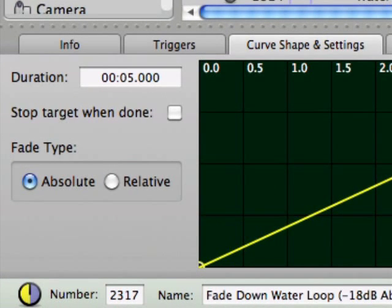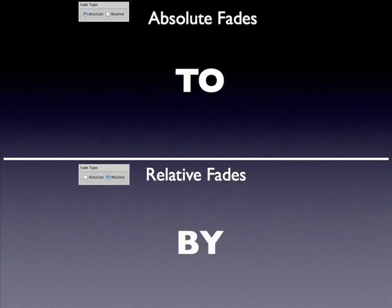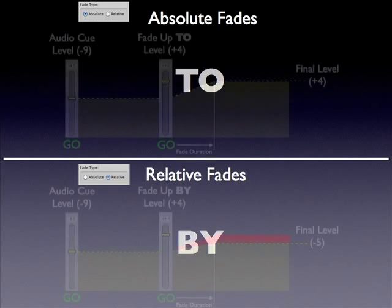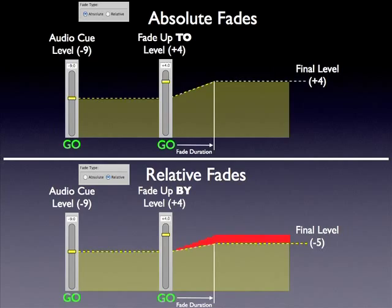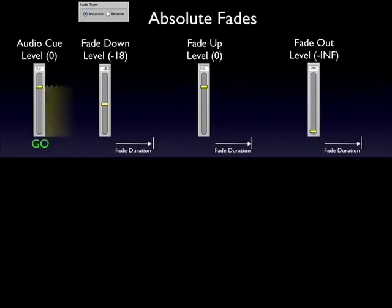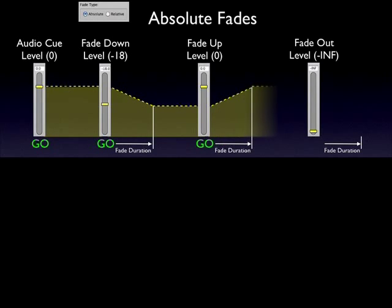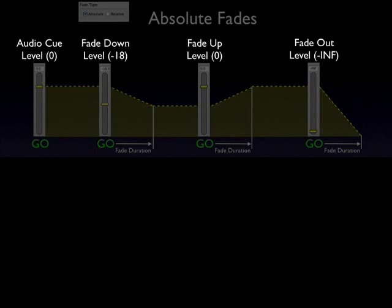This leads us into a discussion of absolute versus relative fades. In the curve shape and settings tab you can select the fade type to be either absolute or relative. One simple key to understanding the difference: think of absolute fades as fades that adjust levels to a specific dB level, whereas relative fades adjust levels by a specific dB level. Looking at cues 2316 to 2319, which use absolute fades, the levels begin at 0 dB, cue 2317 brings them down to -18 dB, 2318 brings them back up to 0 dB, and 2319 takes them to negative infinity and stops playback.